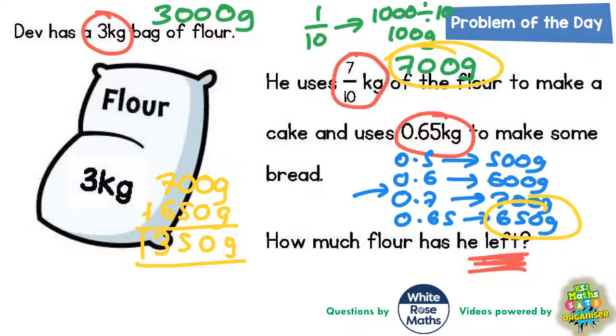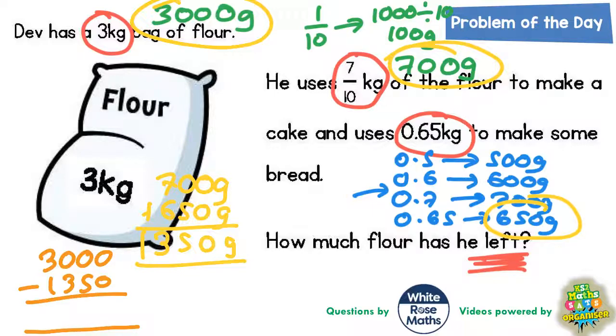So what we need to do now to figure out what he's got left is subtract that 1,350g from the 3,000g that he started with. So if we start with 3,000g and then subtract the 1,350g, whatever is left will be our final answer.